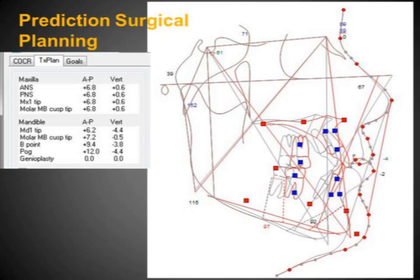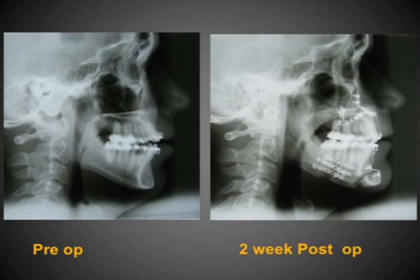In planning the maxillary mandibular advancement surgery, it appears that we can advance his mandible approximately 12 millimeters, which would be substantial for him. In the actual surgery, I was able to advance him close to 18 millimeters, which included the advancement of the chin to even open the airway further. You can see this substantial change in the dimensions.